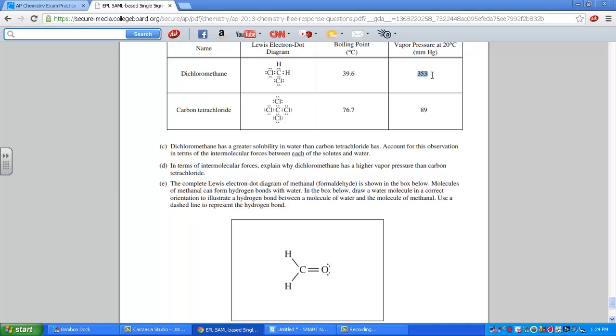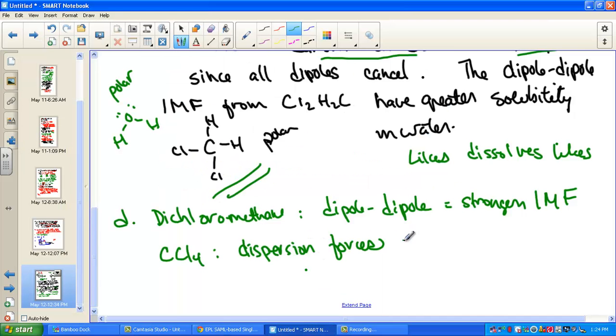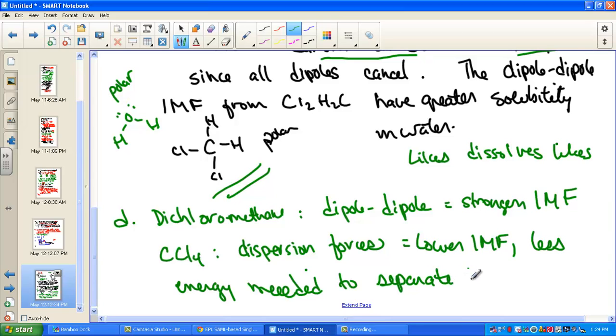Dichloromethane, with its polarity, a high vapor pressure, takes a lot of energy to get the molecules to separate, form a gaseous phase. Carbon tetrachloride, with its low intermolecular attractions, just the dispersion force, takes less energy to get those molecules to separate into the vapor phase. So we'll comment on that, less energy is needed to separate molecules into the gaseous phase. And that would be plenty of commenting there for an A+.